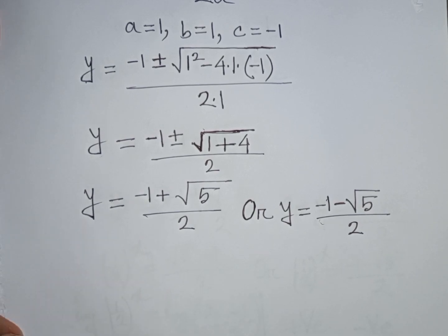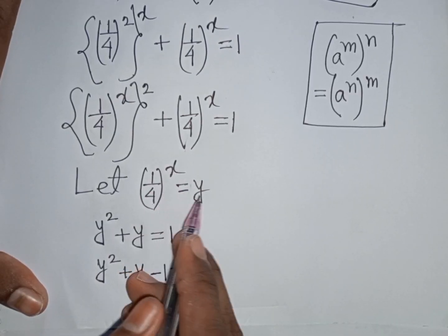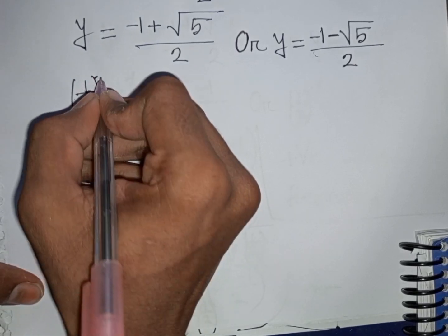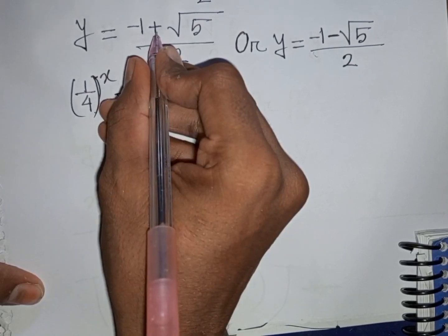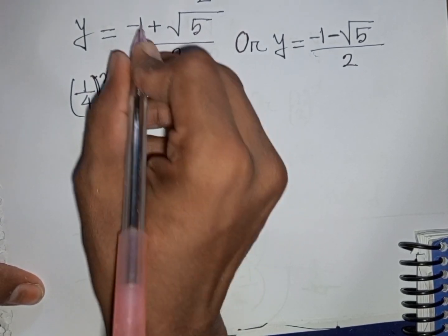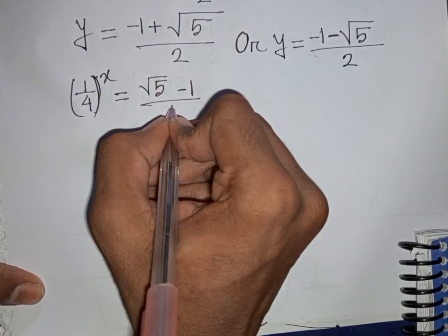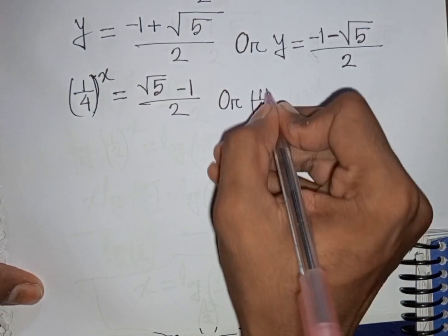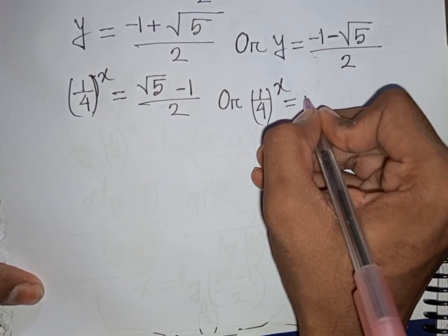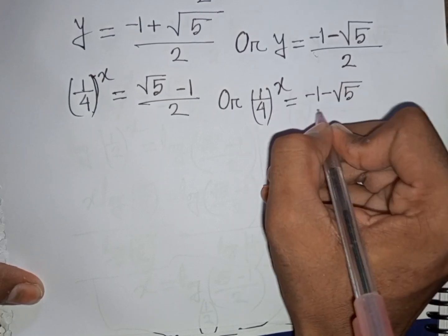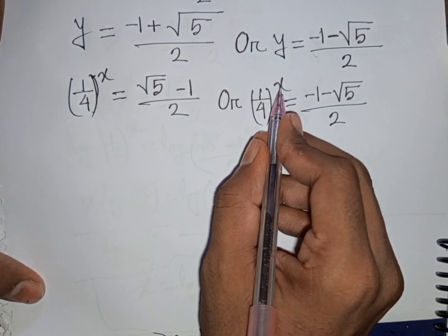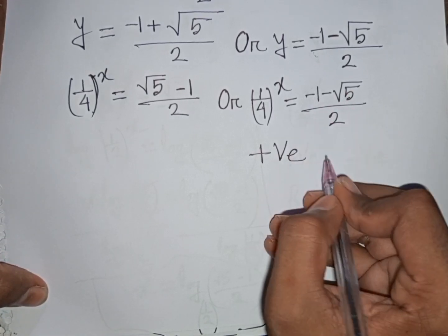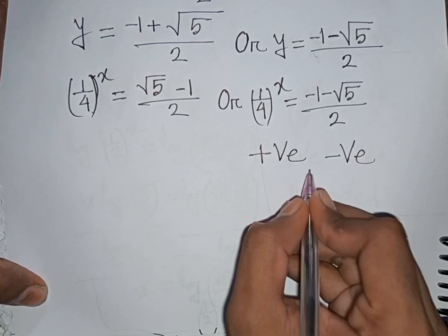Recalling that y = (1/4)^x, which must be positive, the second solution y = (-1 - √5) / 2 is negative and is therefore rejected. We keep y = (√5 - 1) / 2.